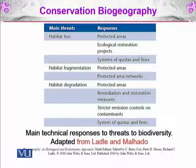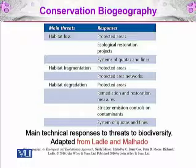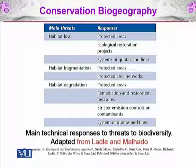If there is a threat of habitat loss, we can implement a system of quotas and fines to cut it down. For habitat fragmentation, the response is again protected areas and protected area networks. For habitat degradation, we again call for protected areas, remediation and restoration measures, and stricter emission controls on contaminants along with a system of quotas and fines.